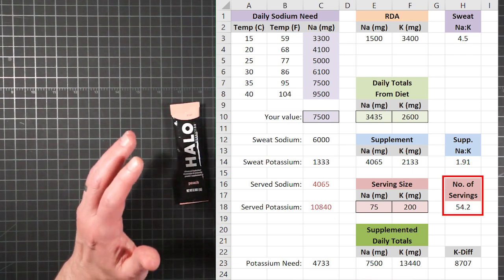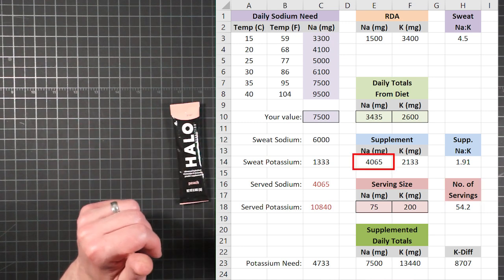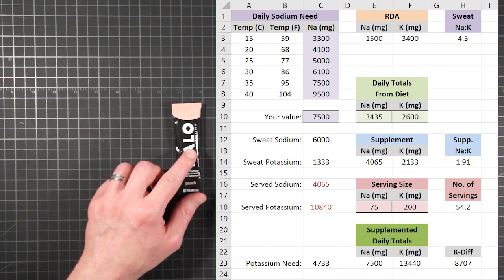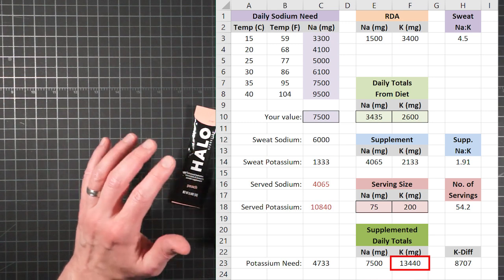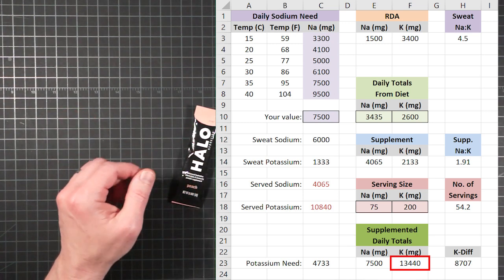Even with a saltier menu, you'd need 54 packets per day to meet the sodium needs of a high temperature situation. But because of the inverted ratio, if you drink enough of these to get your sodium, you'll end up consuming over 13,000 milligrams of potassium. And that's not even as far as it can go.